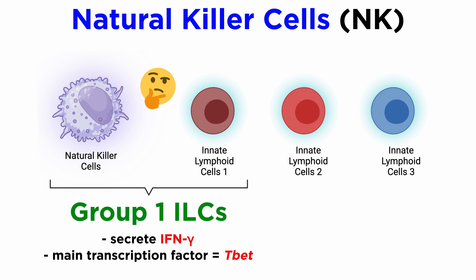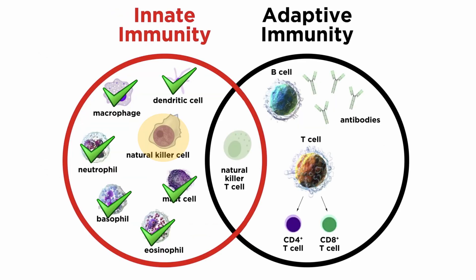NK cells and ILC1s are developmentally distinct, but they share so many common features that they are sometimes difficult to distinguish, particularly under conditions of infection and inflammation. NK cells have been classified as components of the innate immune system. However, they have also been shown to possess numerous developmental and functional overlaps with cells of the adaptive immune system, including T and B cells.